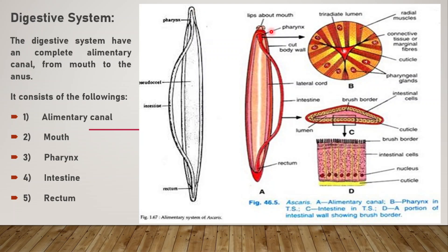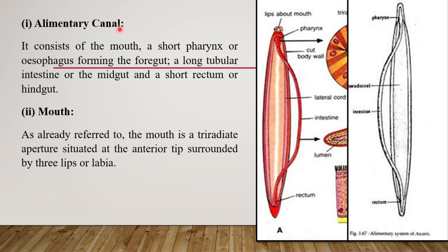Let's see one by one in this colorful diagram. The mouth is tri-radiate with three lips. It is followed by the pharynx, which is followed by the intestinal tube, which then comes into the rectum and opens outside by the anus. The complete alimentary canal is divided into three parts: foregut, midgut, and hindgut.